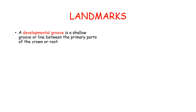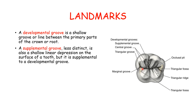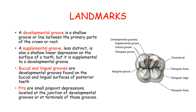A developmental groove is a shallow groove or line between the primary parts of the crown or root, as can be seen here. A supplemental groove is less distinct than the developmental groove — also a shallow linear depression on the surface of the tooth but supplemental to a developmental groove. The buccal and lingual grooves are developmental grooves found on the buccal and lingual surfaces of posterior teeth. Pits are small pinpoint depressions located at the junction of the developmental grooves and at the terminal ends of these grooves; these pinpoint depressions are known as occlusal pits.